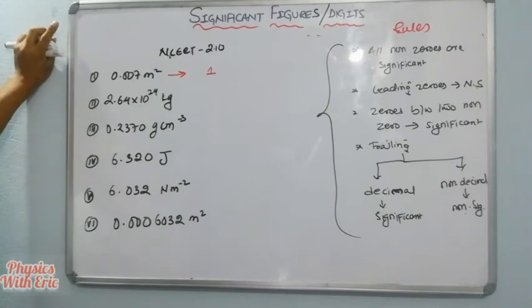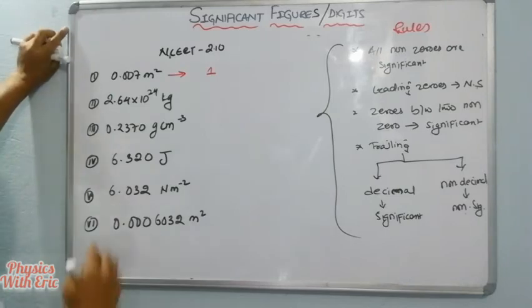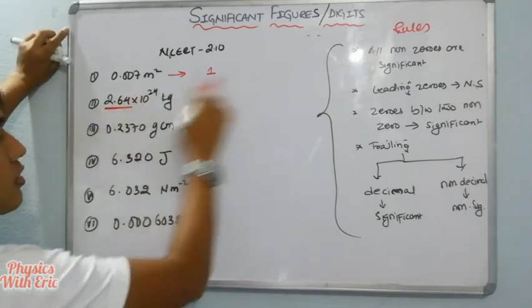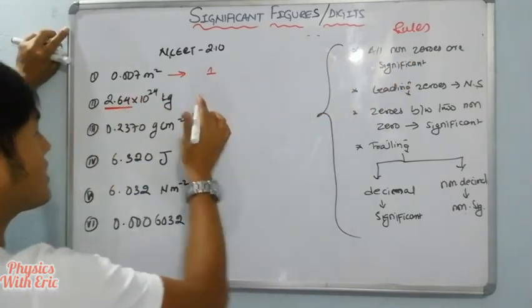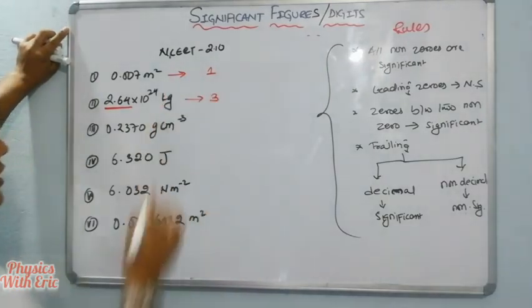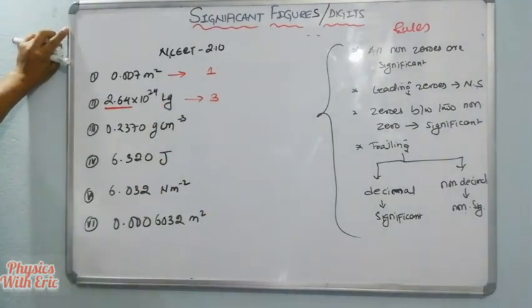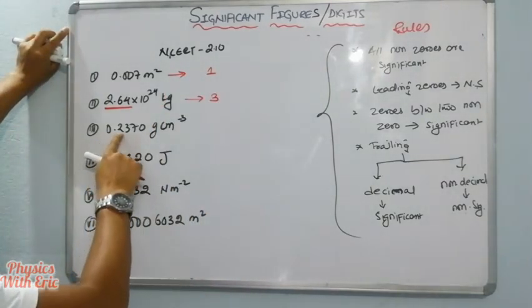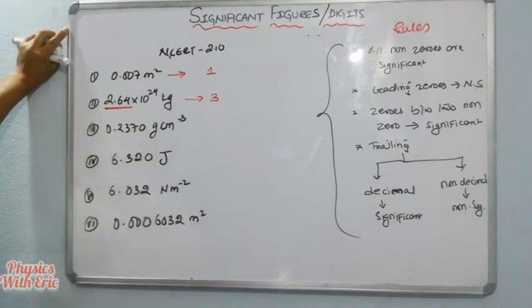Question two: 2.64 × 10⁴. All non-zero digits — 2, 6, 4 — are significant. So the answer is 3 significant figures. Question three is 0.2370.